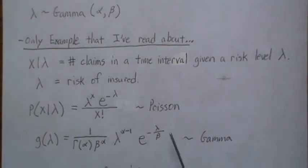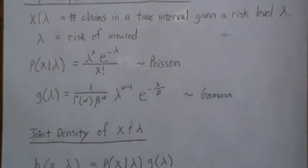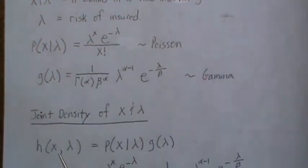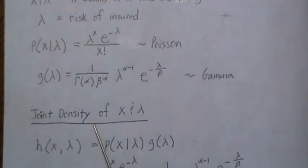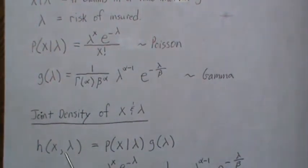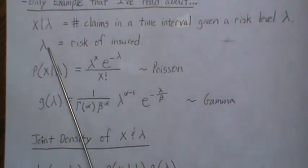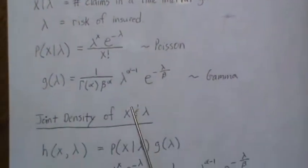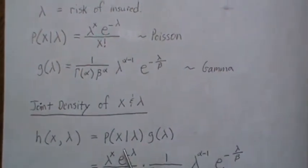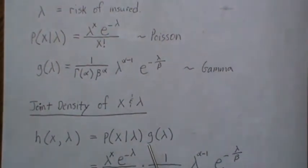So now to start developing the marginal distribution of X by itself, I like to think of it like this. First let's look at the joint density for X and lambda. Notice that we only have X given lambda and lambda modeled, so this can be written as this conditional probability.